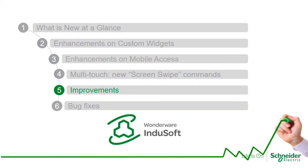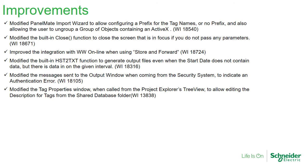Let's take a quick look at improvements. Out of the 25 improvement items, I selected a few: we modified the panel weight import wizard based on customer requests; we implemented a close function — if you don't pass any parameter, we close the screen in focus; we improved integration with WonderOnline using the store and forward option; we modified our function that translates binary proprietary historical trend data into text to process information in different intervals; we changed some messages shown on the output window related to the security system, mostly related to authentication; and on the tag properties window you can now edit the description of tags.